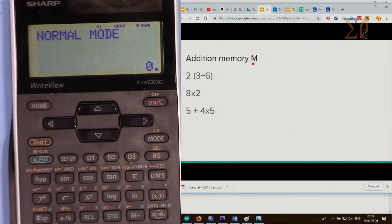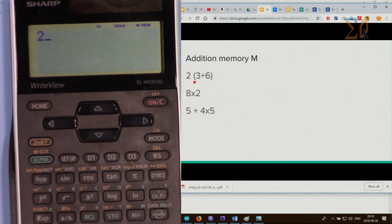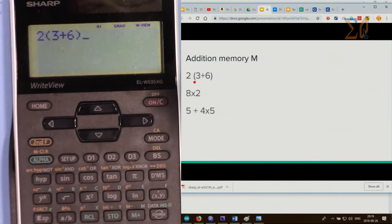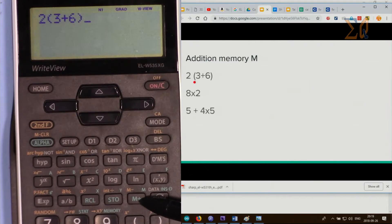So let's do this calculation: 2 multiply by 3 plus 6. Now to do M, this M plus is used for that purpose. Pay attention when I press it—you will see M appear here. Now M appeared on this side. 8 times 2.